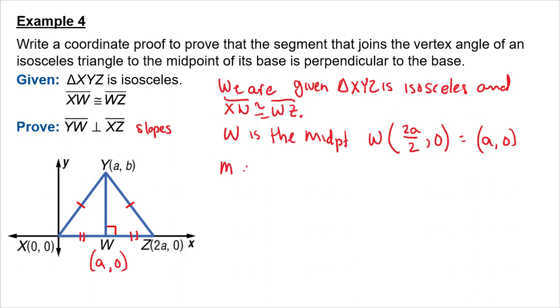So let's find the slope of XZ. That slope is 0 minus 0 over 2A minus 0, which is 0. And the slope of YW is B minus 0 over A minus A, which is B over 0, which is undefined.